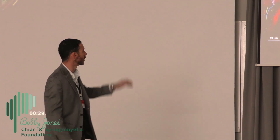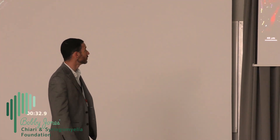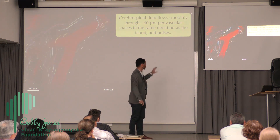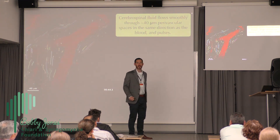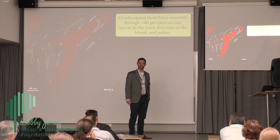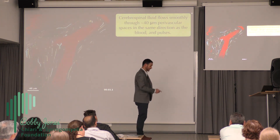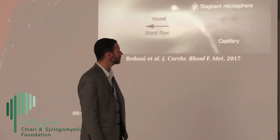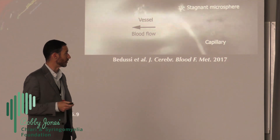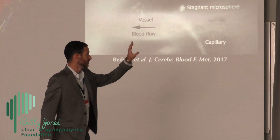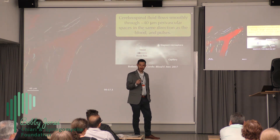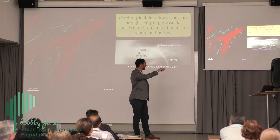From this video you can see that cerebral spinal fluid flows smoothly through 40-micron perivascular spaces in the same direction as the blood, and pulses. We have about 60 such videos from about 60 experiments on 60 different animals. My collaborators and I are not the only people to see characteristics like this — here's one tracer particle moving through a perivascular space in a mouse, pulsing in the same direction as the blood. I should say those authors draw different conclusions later, but their data does support this description.